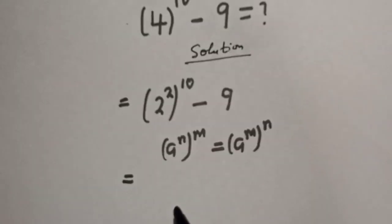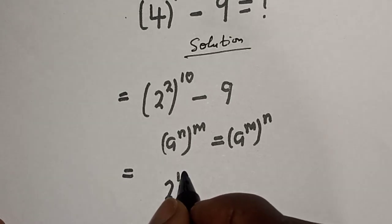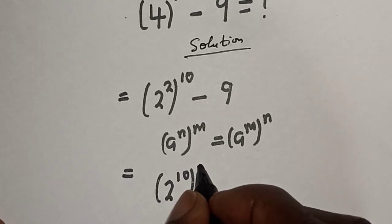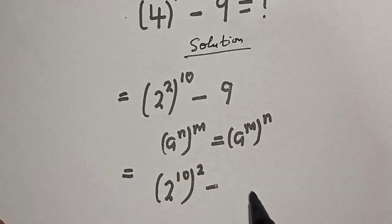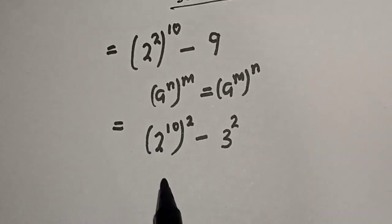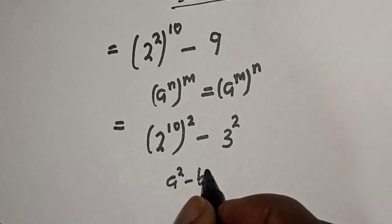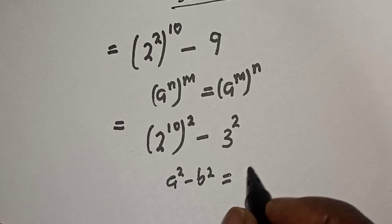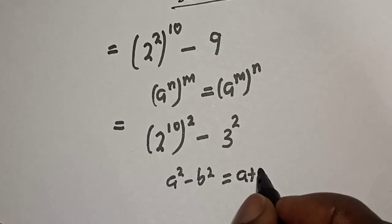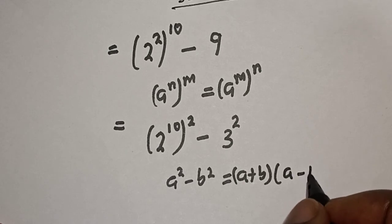This equals 2 raised to power 20 minus 9, which can be written as 3 squared. This is a difference of squares: a squared minus b squared equals a plus b times a minus b.